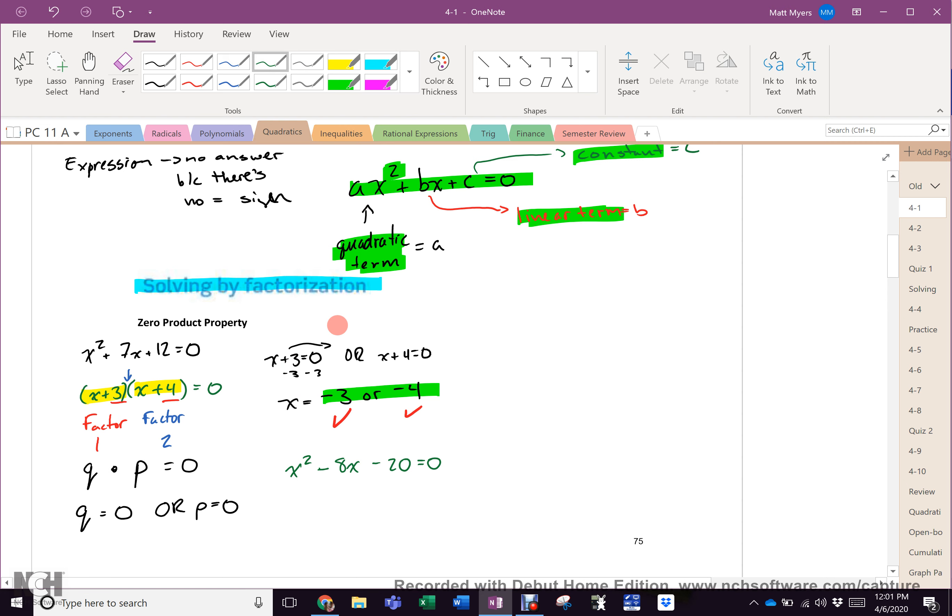X squared minus 8X minus 20 equals 0. You try that. I'm going to pause for a moment. Okay, we're back. If you need longer, just pause. So we're going to factor this. We need to multiply to negative 20 and add to negative 8. So we know it is X minus 10, and X plus 2 would equal 0. X minus 10 would have to equal 0. So X would have to equal 10. Or, X plus 2 would have to equal 0. So X would have to equal negative 2.